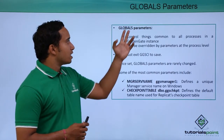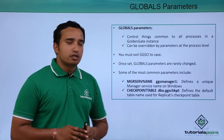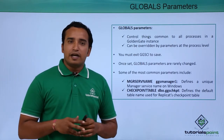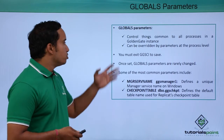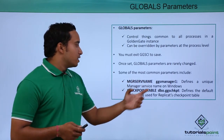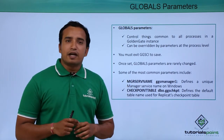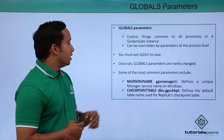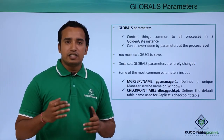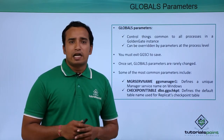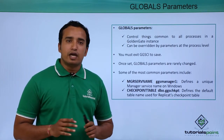The global parameter file controls things common to all the processes in the GoldenGate instance. For example, the name of the manager process is 'manager' by default. If you wish to give a different name, you can use the global parameter to set the manager service name. To save this, you need to exit the GoldenGate software command interface, GGSCI. This is an optional parameter — if you want, you can use it or skip it.